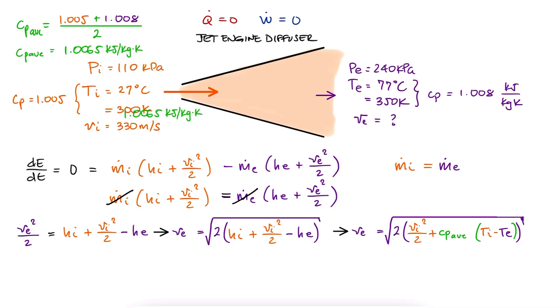We substitute this value in the velocity expression, substitute the given values, check the units that we thoroughly explained in the flow work main lecture video, and find the exit velocity.